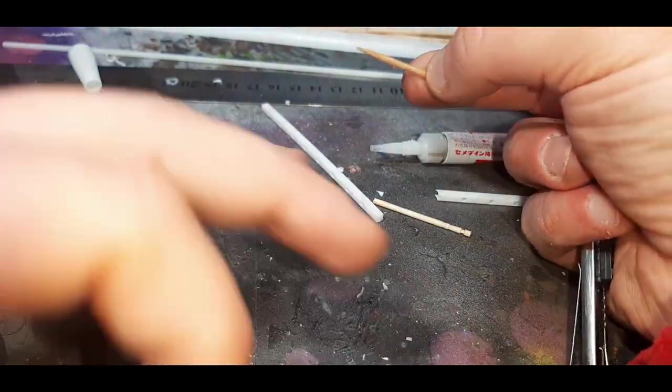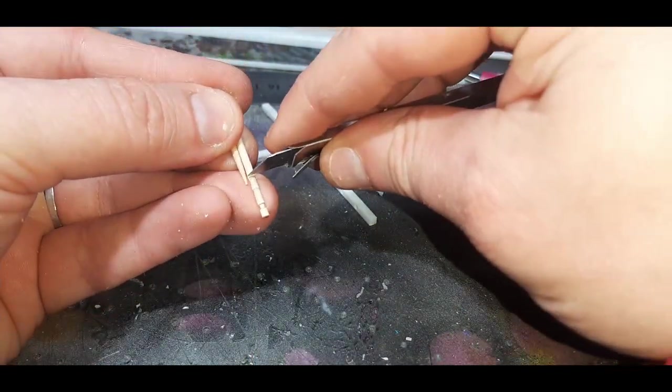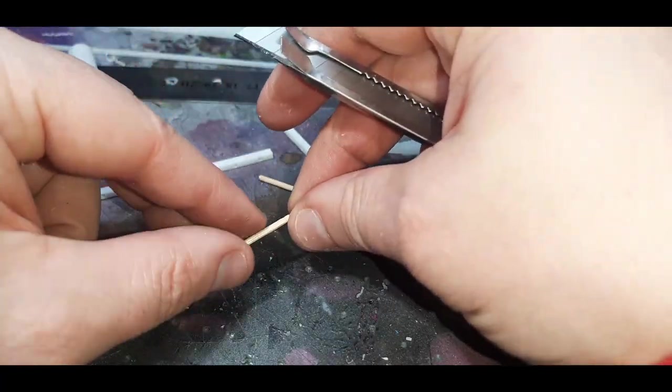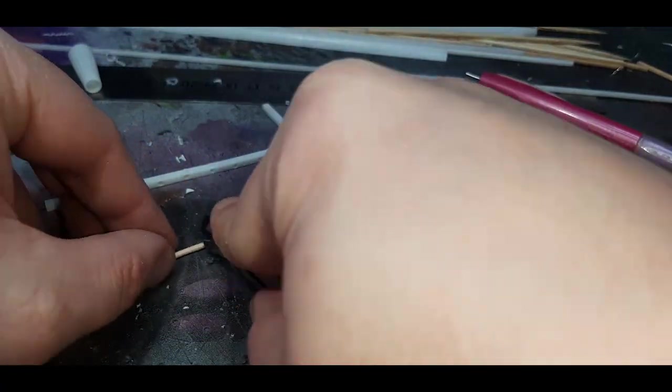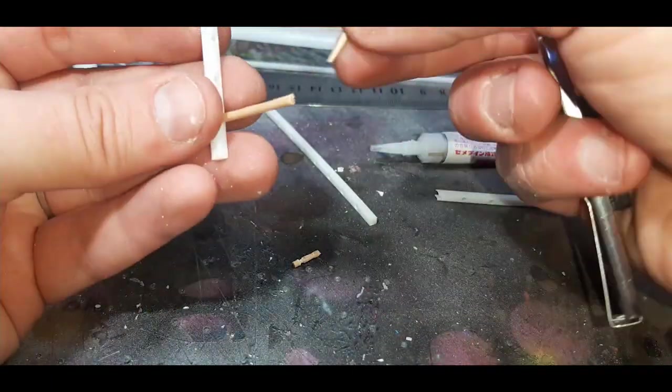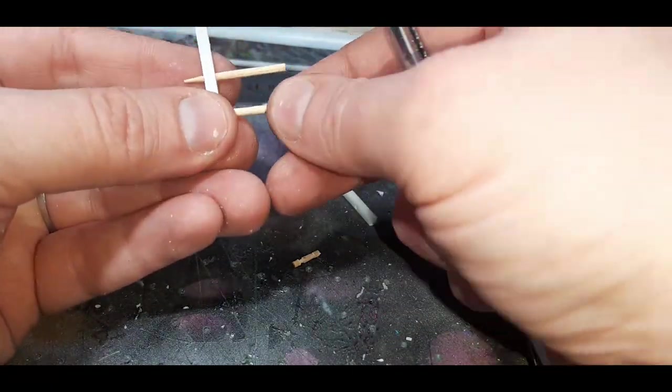For the width of the ladders I didn't measure these. I wanted them to be a little bit random so the size difference wasn't a problem. For this ladder here, for the rungs I just used a toothpick. I cut the toothpick in half so I get two rungs per toothpick. I didn't apply any super glue. I dry fitted these into position and went along the ladder putting these in.